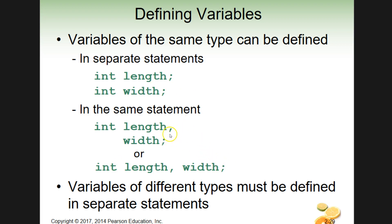These approaches are similar but do look different in your code. Variables of different types have to be defined in separate statements. So you can't define a float the same way as a double in the same statement. When we get to that in a couple of sections, you'll see how that works too.